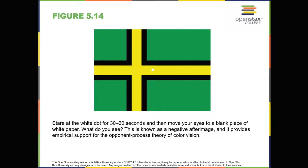So a cell that was excited by wavelengths associated with green would be inhibited by wavelengths associated with red and vice versa. One implication of opponent processing is that we don't experience greenish reds or yellowish blues as colors. Another implication is that this leads to the experience of negative after images. An after image describes the continuation of a visual sensation after removal of the stimulus. For example, when you stare briefly at the sun and then look away, you may still perceive a spot of light although the stimulus has been removed. When color is involved in the stimulus, the color pairings identified in the opponent process theory lead to a negative after image.